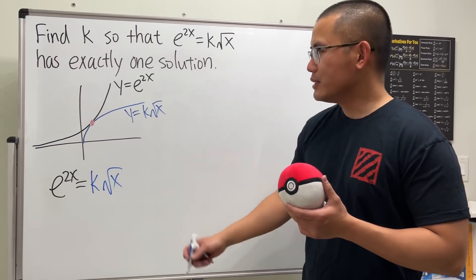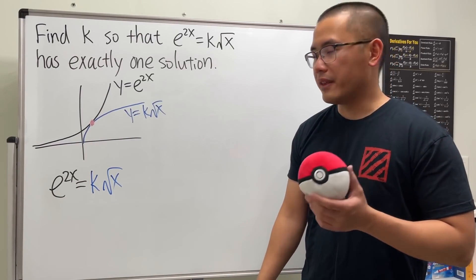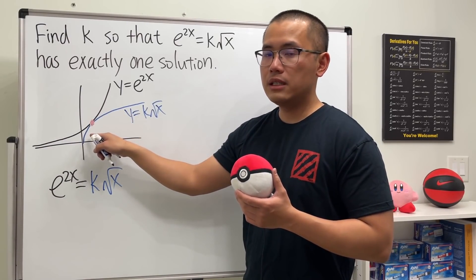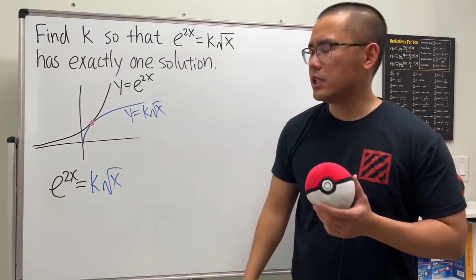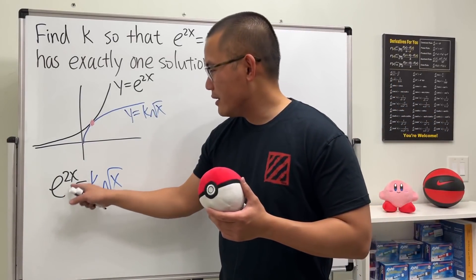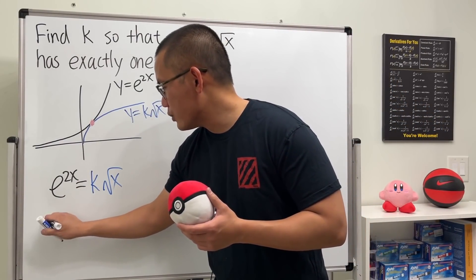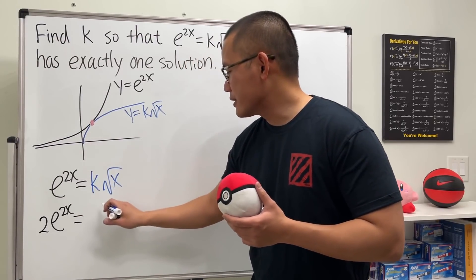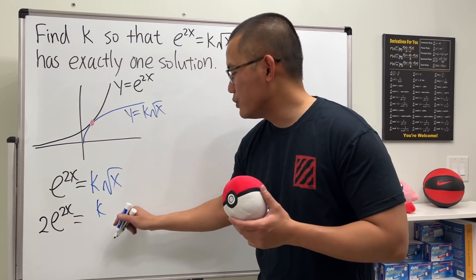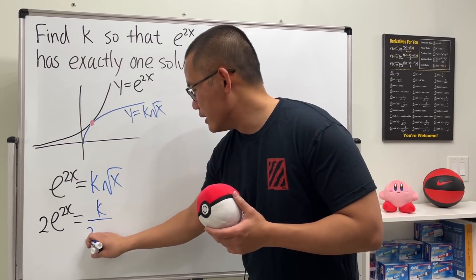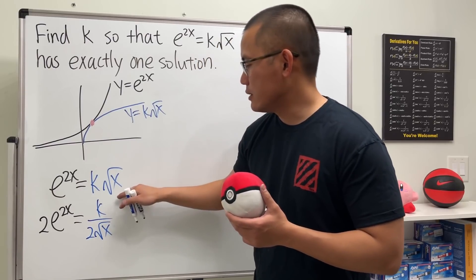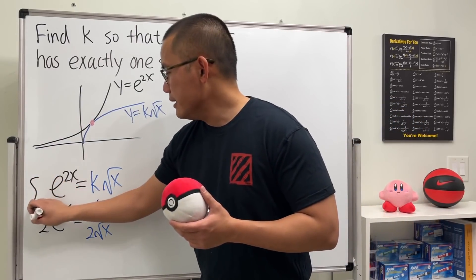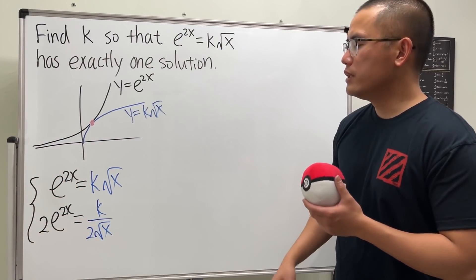If two curves touch each other at exactly one point like this, they also have the same derivative. Differentiating the left side gives 2e^(2x). Differentiating the right side gives k times 1 over (2 square root of x), which is k over (2 square root of x). So now we have a system of two equations.